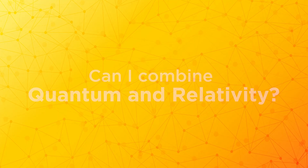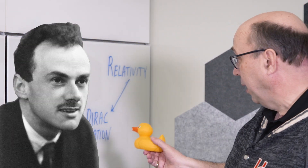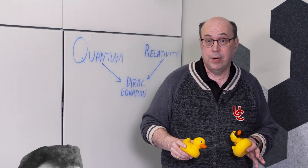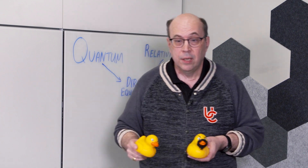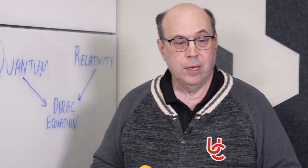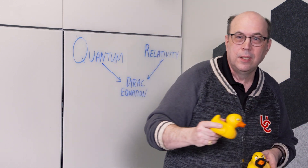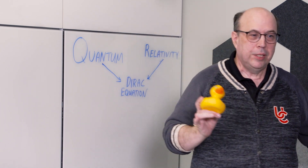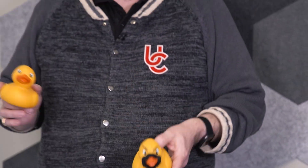Eventually a physicist asked: what happens if I want to study a really tiny, really cold, really fast-moving duck — can I combine quantum and relativity? And Paul Dirac did this, creating the Dirac equation. A cool part of the Dirac equation is that its solution is a quadratic. Quadratic equations have positive solutions and negative solutions. When people first looked at the Dirac equation, the positive solution exactly explained that very cold, very small, fast-moving duck.